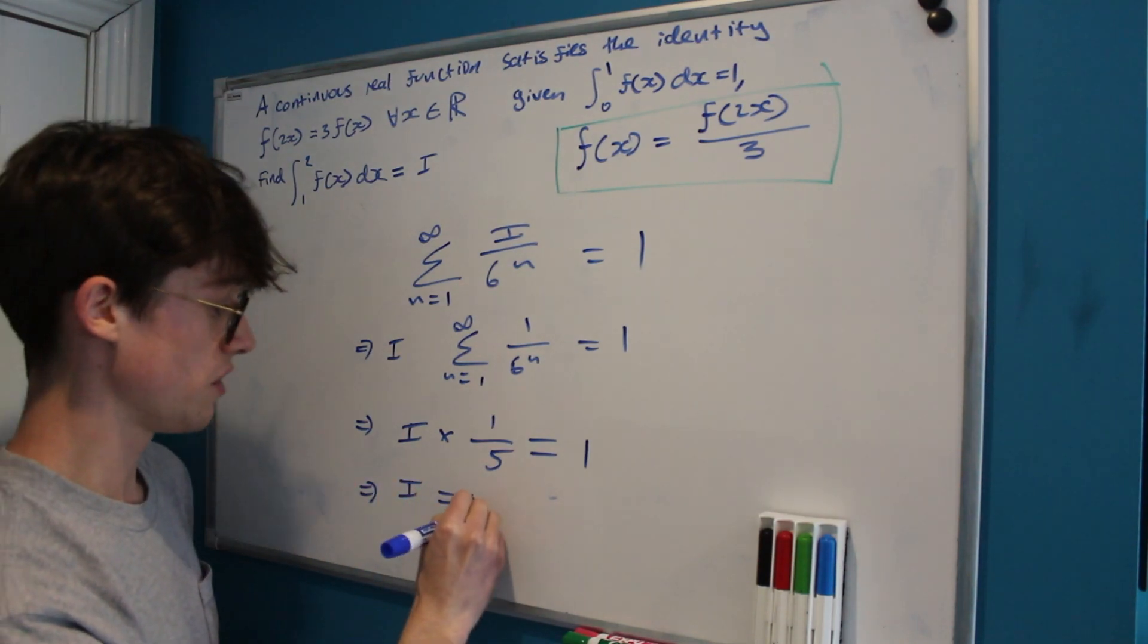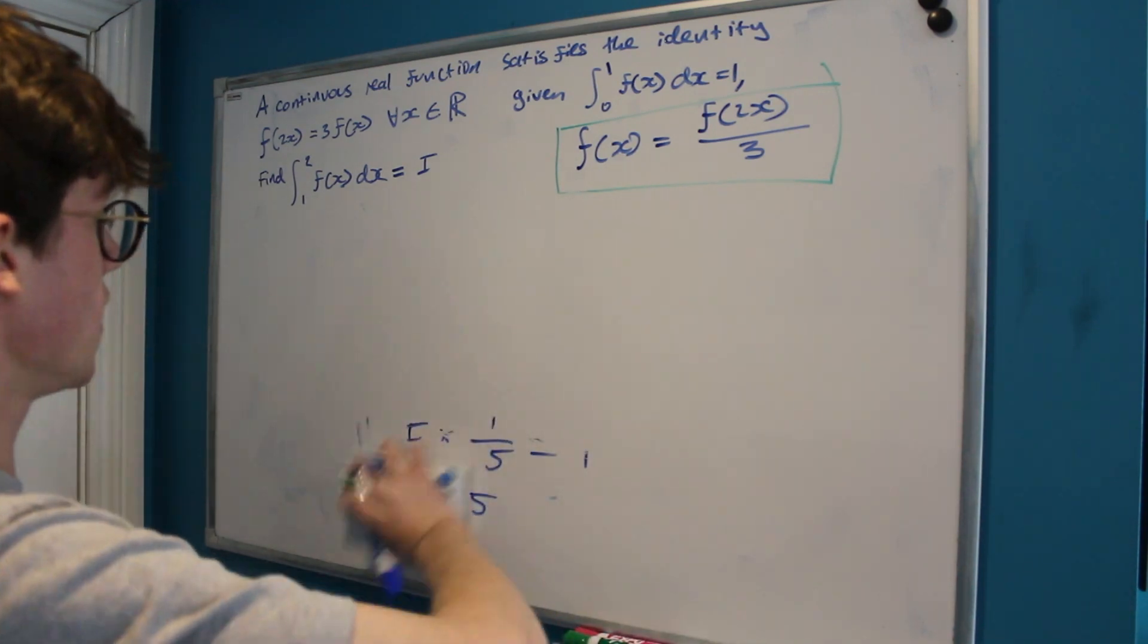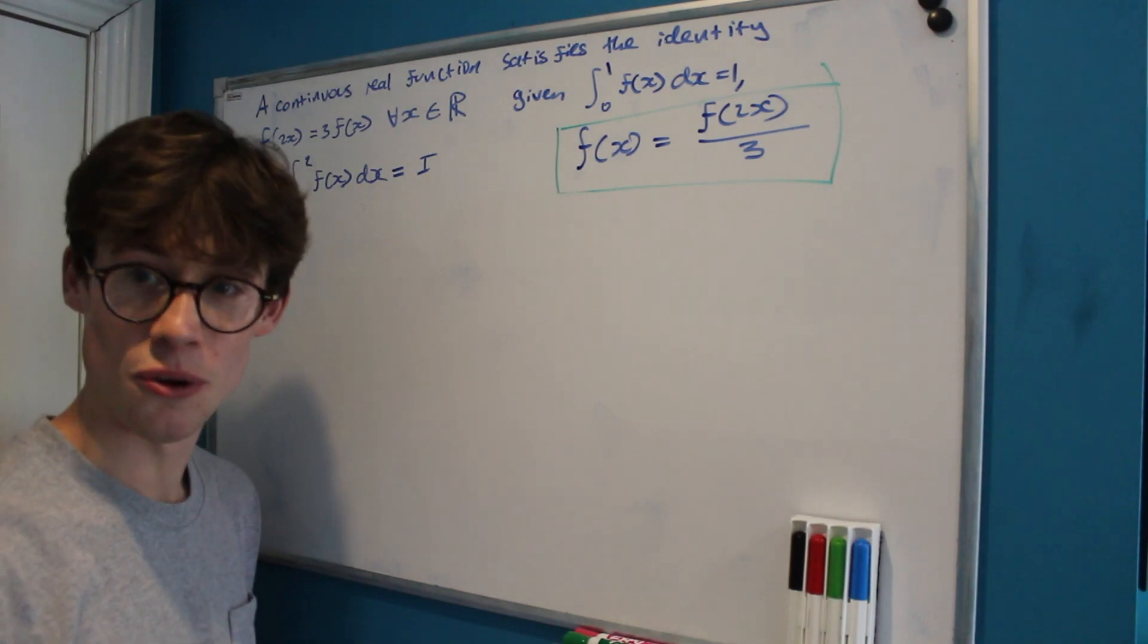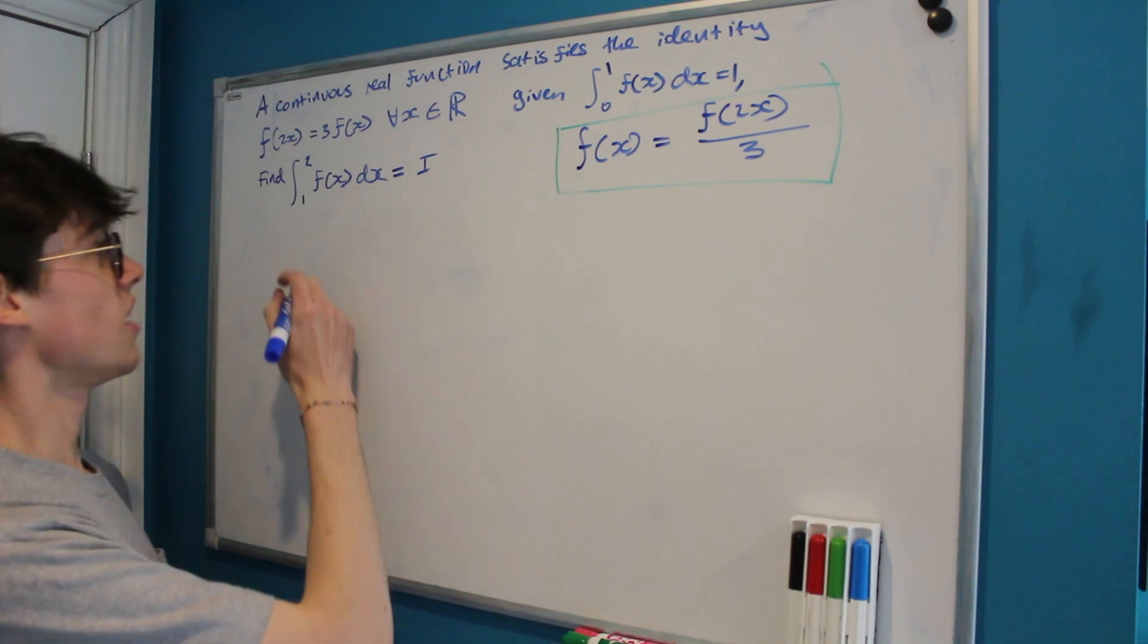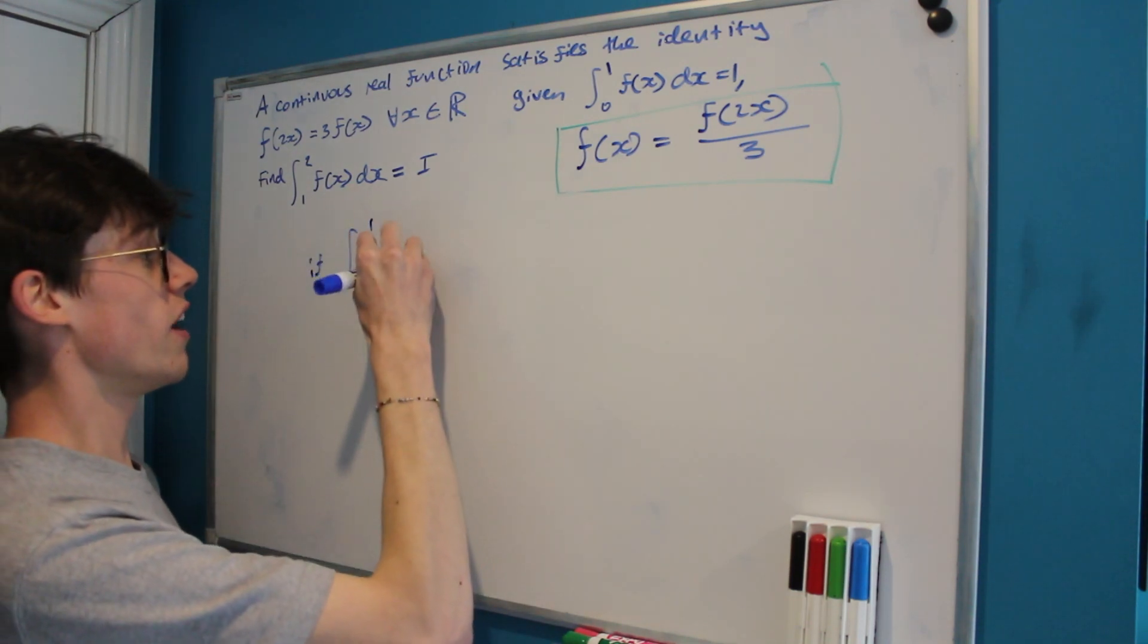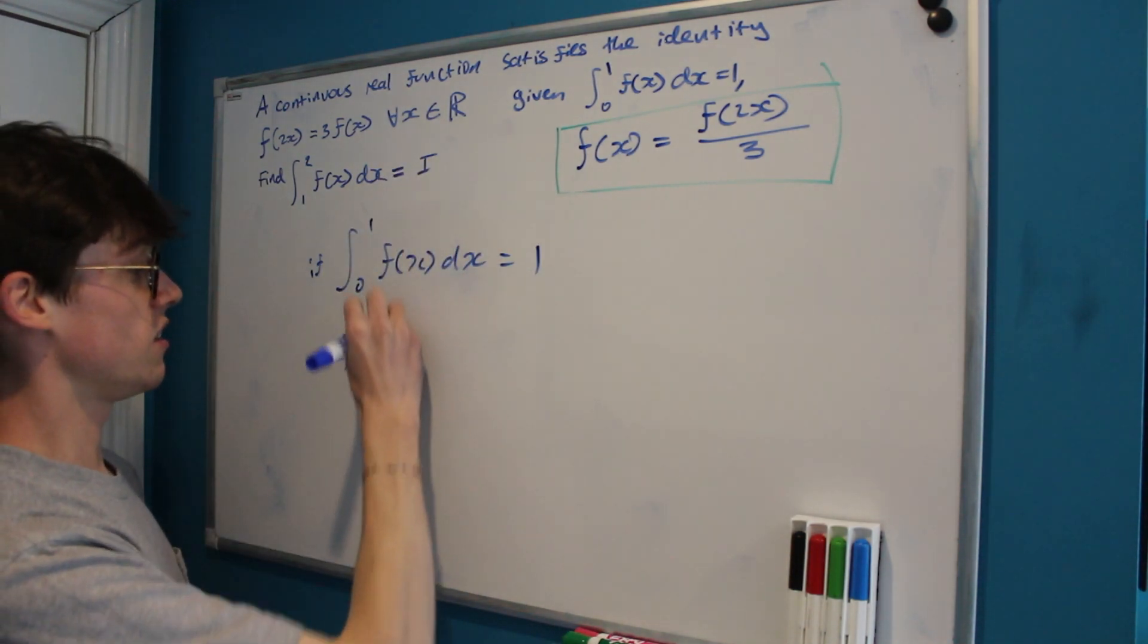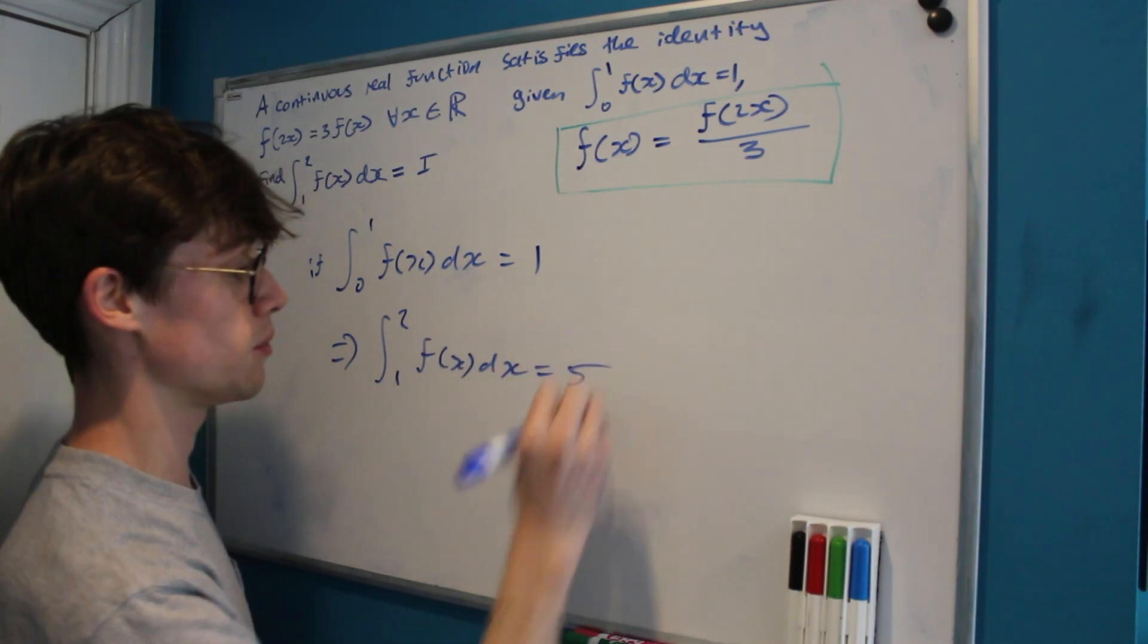And what does that tell us that i is equal to? Well, it means that our integral must be equal to 5. And so by doing a nice summation involving the powers of 2 using this single identity that we've been given, we can say that if the integral from 0 to 1 of f dx equals 1, then that means the integral from 1 to 2 of f dx is equal to 5.